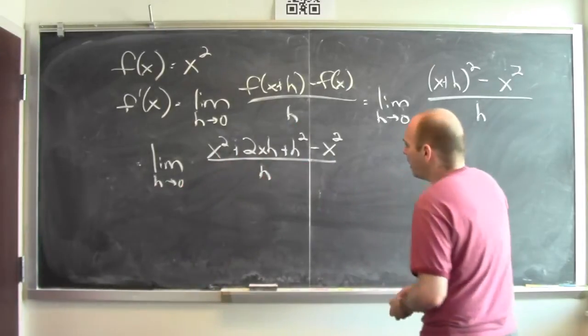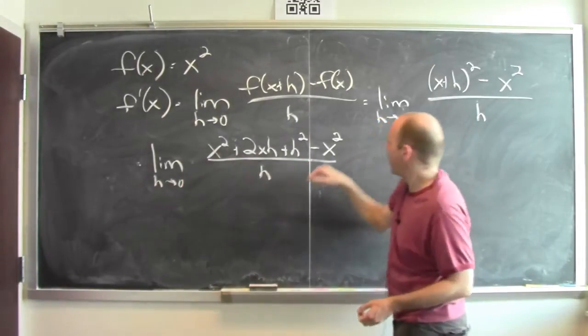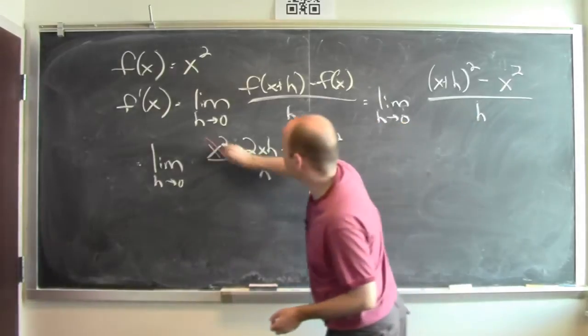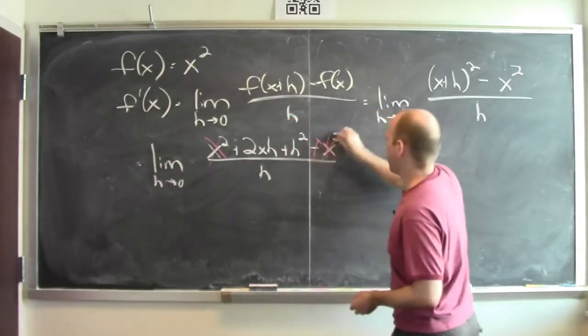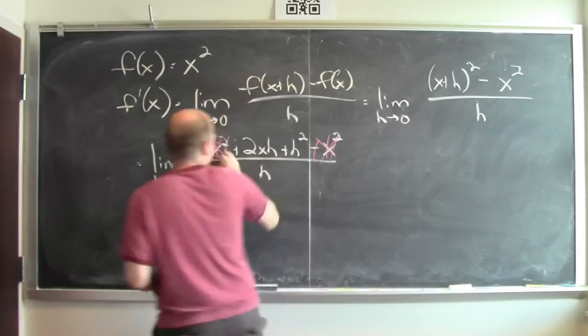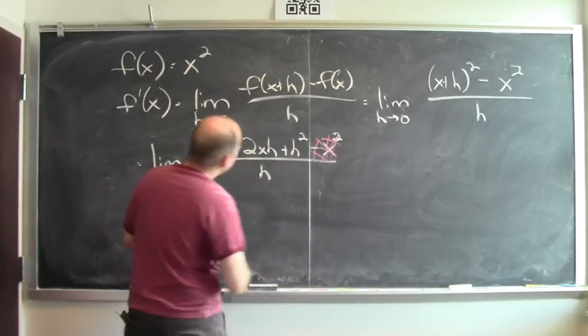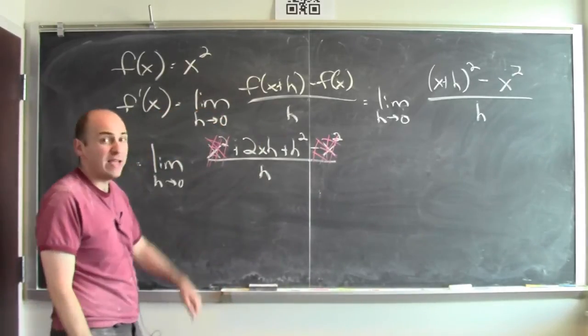Now in this situation, I've got an x squared and a minus x squared, so those terms die. And what am I left with? Just 2xh plus h squared over h.